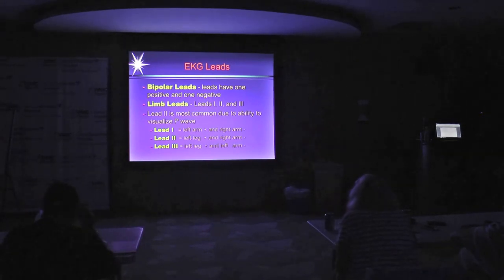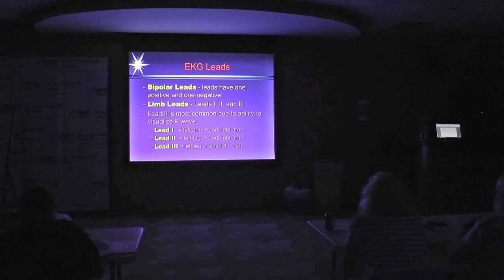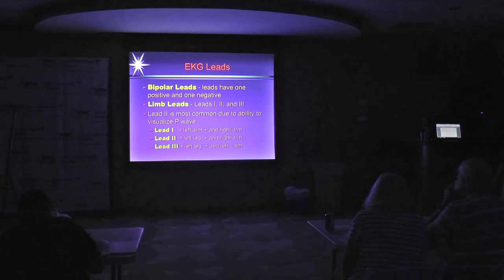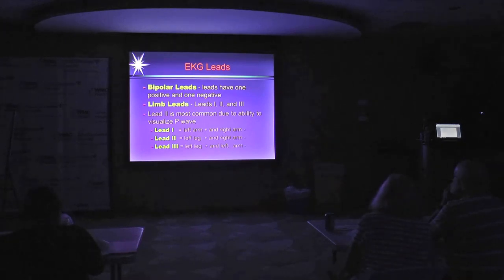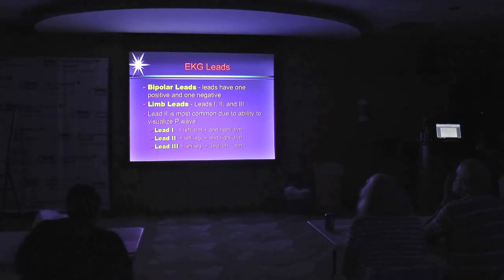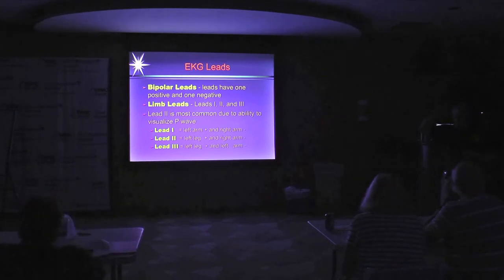The computers built into modern monitors are designed to interpret EKGs using limb leads. If placed on the torso, interpretation would be incorrect. Limb leads are different from the V leads that go on the chest. When doing a three or four lead EKG, you're just using limb leads and can only see certain views of the heart. No EKG we do can look at the posterior part of the heart — that would require placing electrodes on the back.